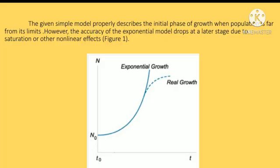The given simple model properly describes the initial phase of growth when population is far from its limits. However, the accuracy of the exponential model drops at a later stage due to saturation or other non-linear effects. The graph below represents the Malthusian growth model depicting exponential growth and real growth.